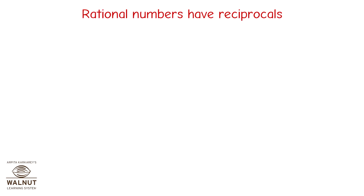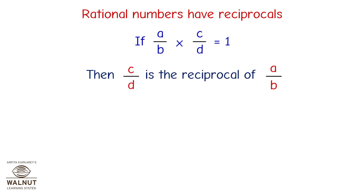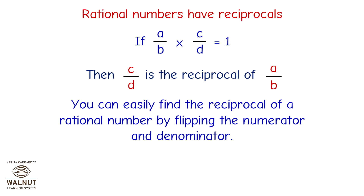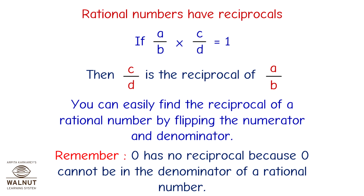Rational numbers have reciprocals. If a/b × c/d = 1, then c/d is the reciprocal of a/b. You can easily find the reciprocal of a rational number by flipping the numerator and denominator. Remember, 0 has no reciprocal because 0 cannot be in the denominator of a rational number.